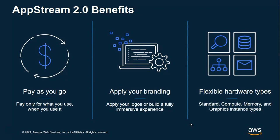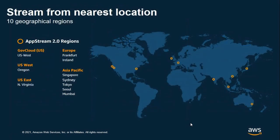AppStream provides flexible hardware types — a diverse set of instances starting from 7.5 cents per hour for non-graphics and 25 cents per hour for graphics instances. This gives ISVs and service providers the flexibility to choose the instance type best suited for their application to provide the best experience. The service is available in 10 AWS regions: GovCloud, US West, Oregon and North Virginia in the US, Frankfurt and Ireland in Europe, and Singapore, Sydney, Tokyo, Seoul, and Mumbai in Asia. This provides ISVs the ability to stream their application to customers from the location closest to them, providing the best user experience and expanding customer reach across the globe.